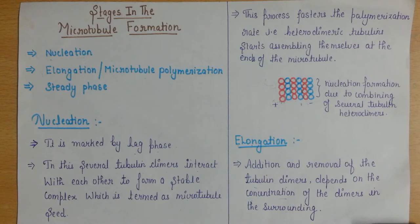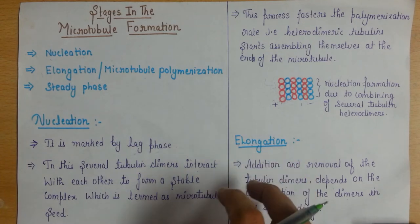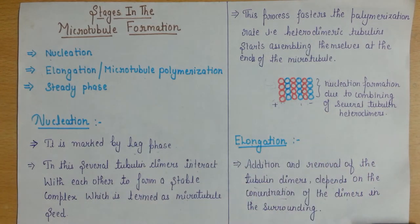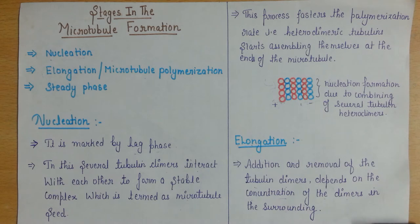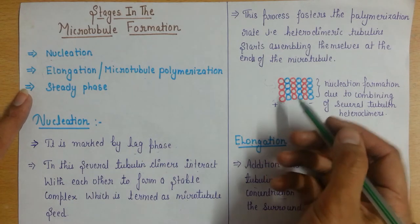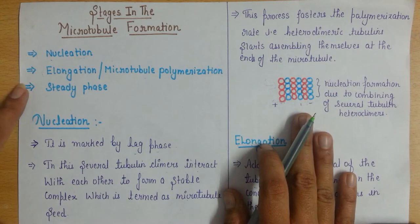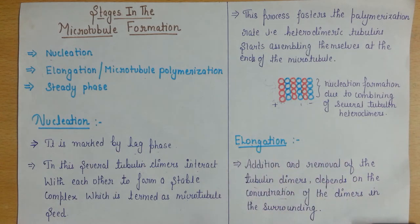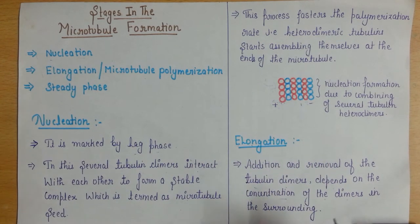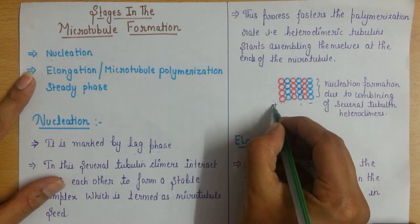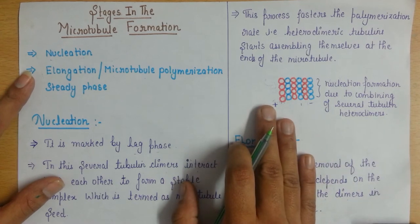After the nucleation phase, comes your elongation phase. In the elongation phase, many heterodimeric subunits, which are GTP-bound, are going to combine with both ends. Alpha-beta tubulins come and bind at both ends, and these heterodimers are combined with the GTP molecule. The subunits they are binding to also have GTP present. However, polymerization and assembly of heterodimer subunits will always be faster and in greater amount at the plus end than at the minus end.